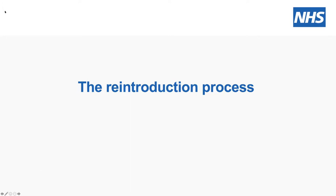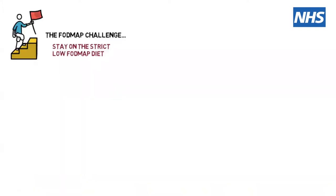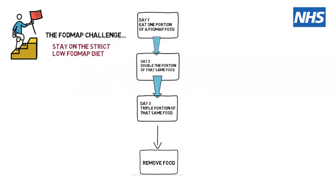So let's look at the reintroduction process. During this process, you stay on the strict low FODMAP diet throughout. It's a very simple process: you challenge with one portion of a set food on day one, then you double that food on day two, and triple it on day three.